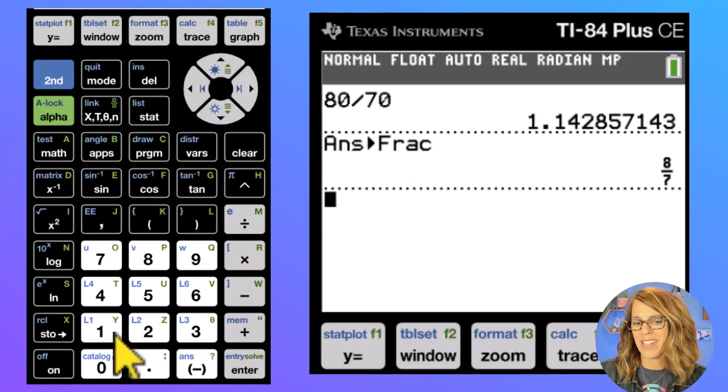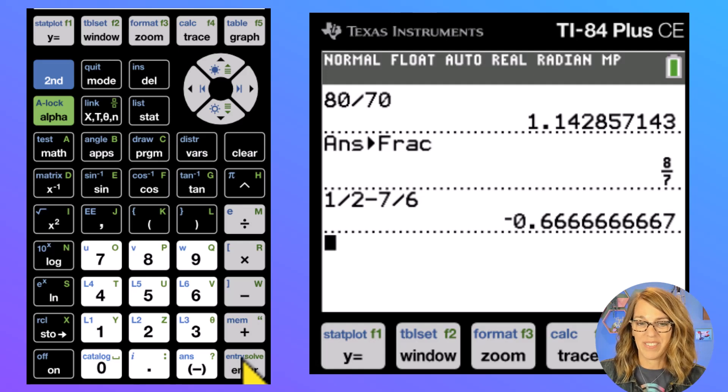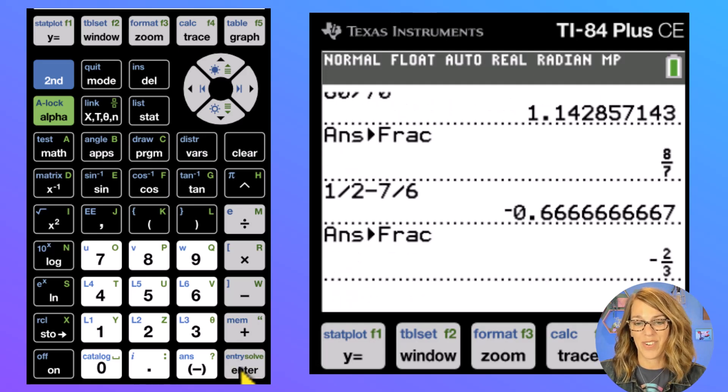This is also how you can add and subtract fractions. Let's say that we wanted to do something like one half minus seven sixths. Enter. Okay, so we get this answer. Again, this answer is in decimal form. I can go to the math menu and then hit enter for convert to fraction and then enter again.